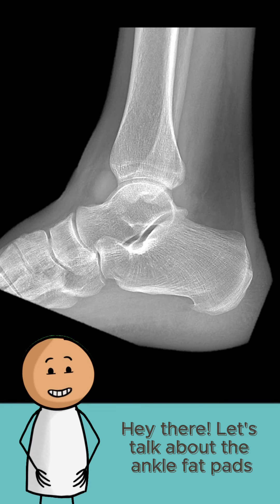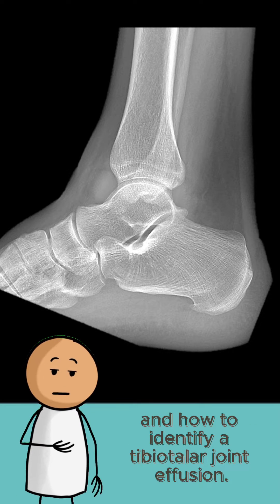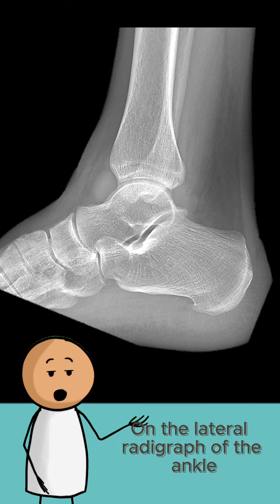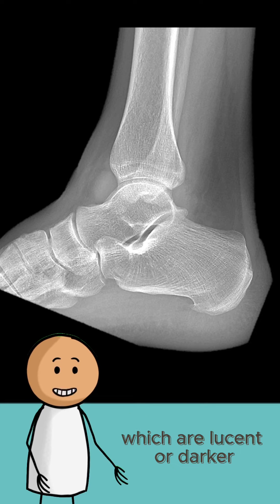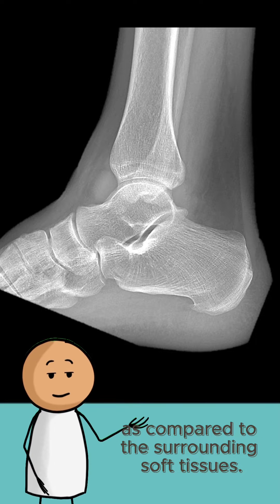Hey there! Let's talk about the ankle fat pads and how to identify a tibiotalar joint effusion. On the lateral radiograph of the ankle, we can identify three fat pads, which appear lucent or darker as compared to the surrounding soft tissues.